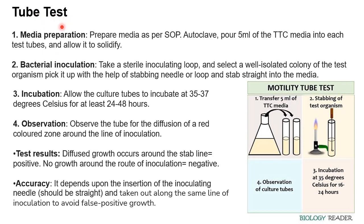Now let's start with the tube assay. First, prepare the media according to the SOP, autoclave it, then pour 5 ml of TTC media into each test tube and allow it to solidify. Then perform aseptic transfer for bacterial inoculation: take a sterile inoculating loop or stabbing needle, select a well-isolated colony, and stab straight into the media. We are not going to mix in the soft agar — we are going to just stab inoculate.